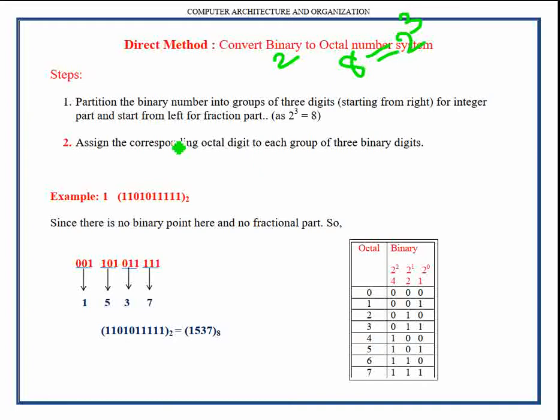Now let us apply this procedure to convert the given binary number in the example into octal. This binary number does not contain any binary point, so there is no fractional part. We can partition it into groups of three digits starting from the rightmost direction, continuing towards the left.